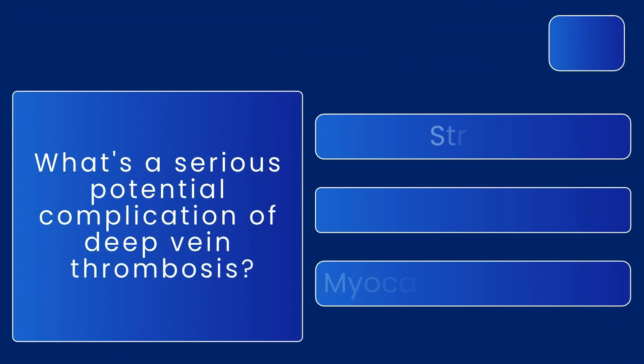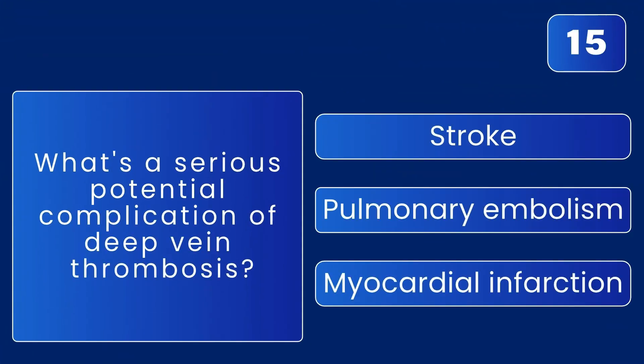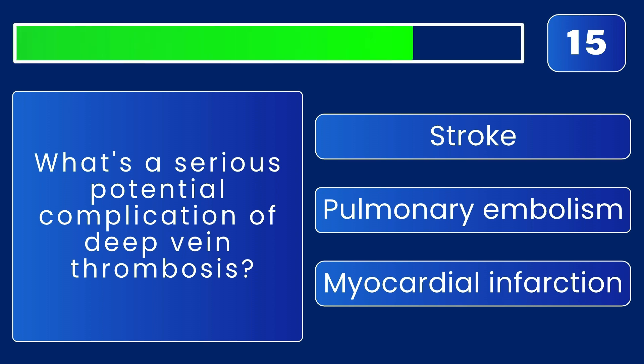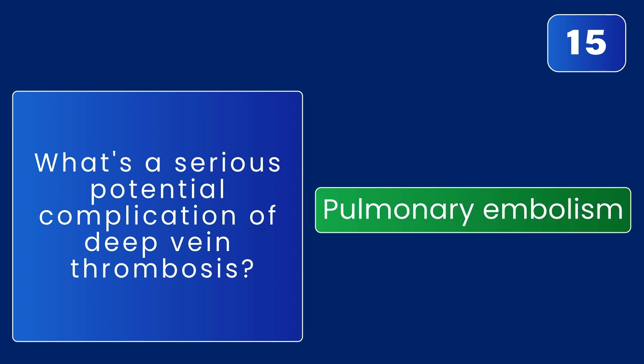What's a serious potential complication of deep vein thrombosis? The answer is pulmonary embolism — a clot can travel to the lungs.